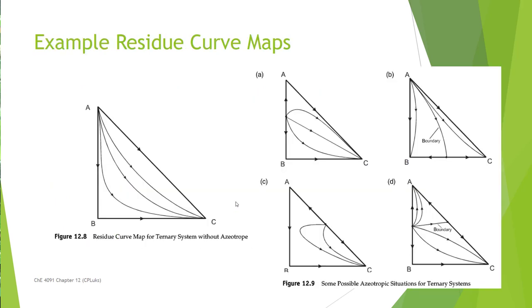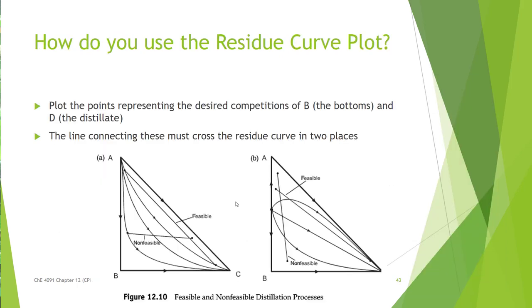And these are some examples of residue curve maps for various ternary systems, three components, A, B, and C. And they can, as you see here, there's lots of different ways that these graphs can work. But the key thing is, we want to know whether or not a separation is going to be possible. And so the trick is that what we want to do is plot our points, our bottoms and our distillate product, what we are expecting, plot those on the curve here. And we need it for any one of these lines, we need it to cross that particular residue curve two times. So it's not crossing two of the residue curves. This is not stable. It's crossing each curve only one time, so this would not be a possible separation. But this one, across from here to here, is possible.